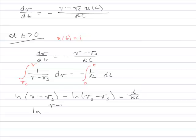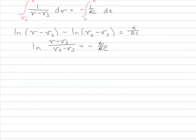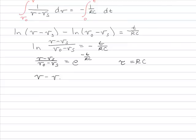Raised them both to the e, so I end up with this. And remember tau in my RC circuits was RC. So I've got V minus Vs equals V0 minus Vs times e to the negative t over tau.